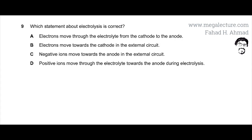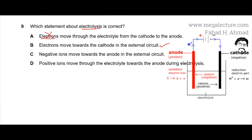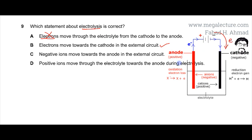Let's first discuss what electrolysis is. Here I have drawn a diagram for electrolysis, and you can see that there's a battery connected to two terminals. One is the cathode, which is the negative terminal. Electrons are moving from the battery to the cathode, and the other terminal is the anode, where the electrons are traveling back to the battery.